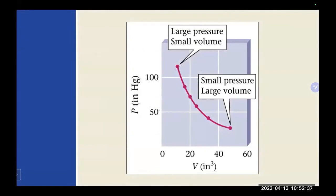From a graph of a particular gas, at much smaller volumes we see a much higher pressure, and as the volume increases, giving molecules more room, less collisions occur and we see a significant decrease in pressure — that is the Boyle's Law relationship.